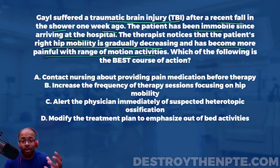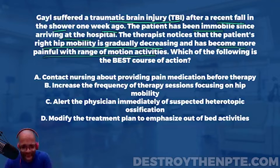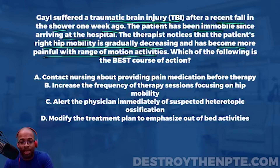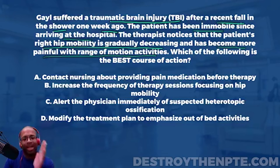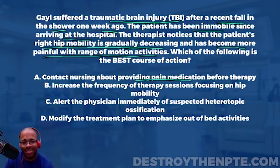The question asks which of the following is the best course of action — so this is an intervention question, what do we do first? Let's go through the answer choices again: A is contact nursing about providing pain medication before therapy; B is increase the frequency of therapy sessions focusing on hip mobility; C is alert the physician immediately of suspected heterotopic ossification; D is modify the treatment plan to emphasize out of bed activities.